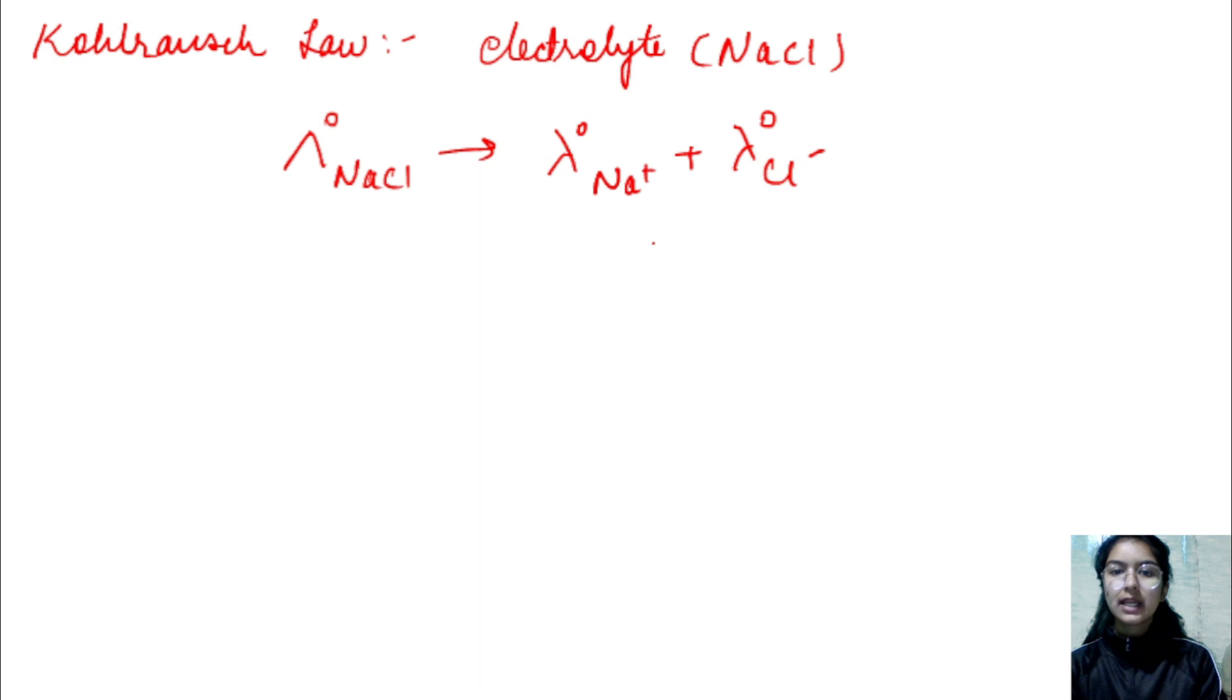How can we explain it? If we talk about any electrolyte, the limiting molar conductivity of any electrolyte can be represented as the sum of individual contributions of the cation and the anion. This is Kohlrausch's Law. It's quite simple.